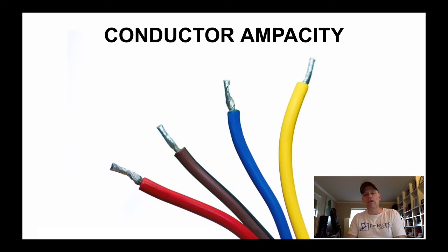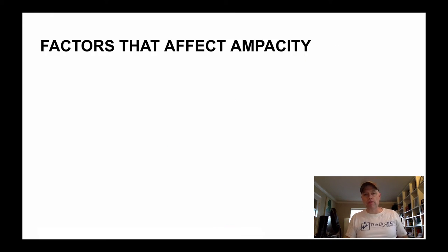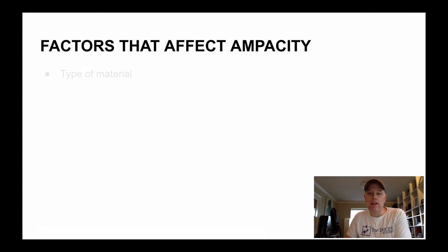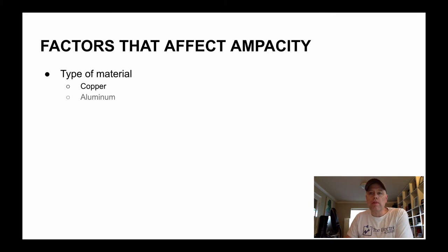So let's get digging in here. I like to keep these things short and sweet. Conductor ampacity — how do we figure out what current we're allowed to put on what conductors? First off, there are some factors that affect your ampacity. There's the type of material: are we using a copper conductor or are you planning on using an aluminum conductor?